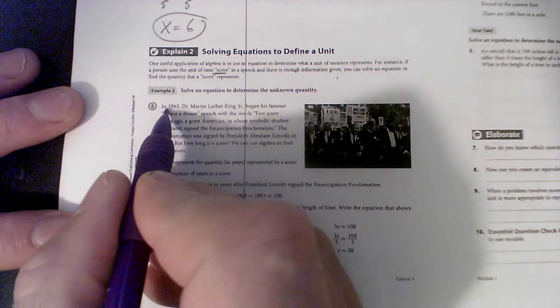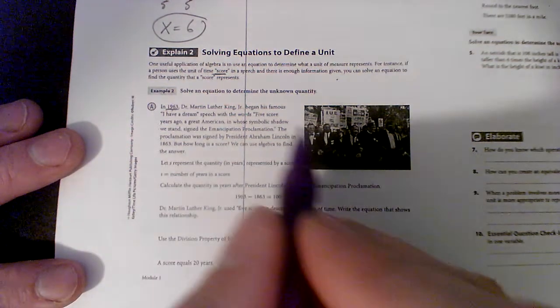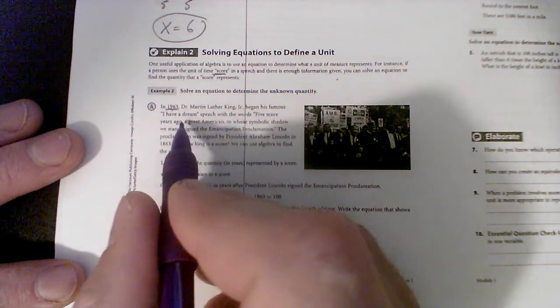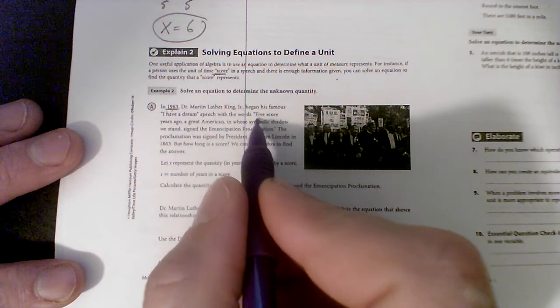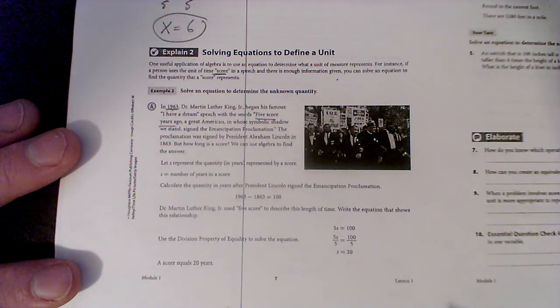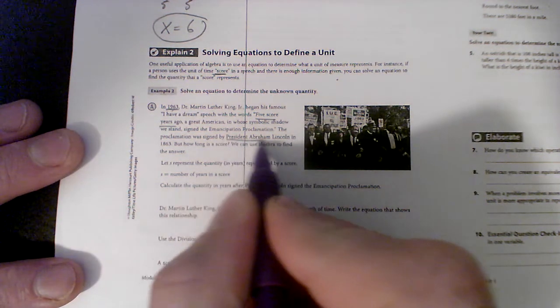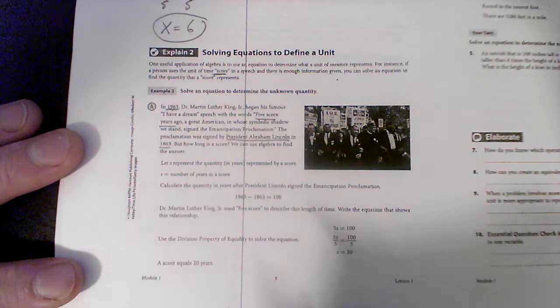And here's what happened. In 1963, none of you were born. Dr. Martin Luther King began his famous 'I Have a Dream' speech with the words 'Five score years ago, a great American, in whose symbolic shadow we stand, signed the Emancipation Proclamation.'